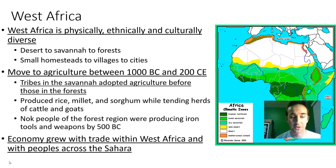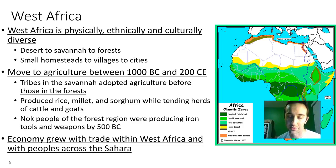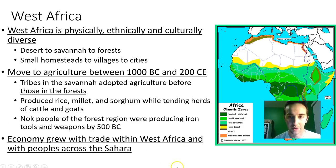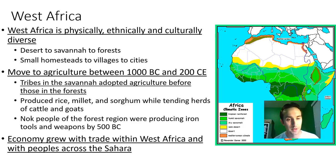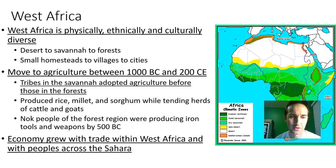As far as what they're producing, they're producing rice, millet, and sorghum, while also tending herds of cattle and goats. We get a lot of rice farming in West Africa, and as a result, later on in America, rice is going to be a huge crop and a lot of slaves are going to know how to grow it already because they've got the experience from West Africa. The Nok people of the forest region were already producing iron tools and weapons by 500 BC, so we've got advancements in both agriculture and iron working.